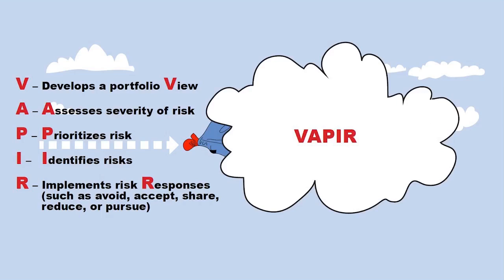The work begins as we go through the fog and the risk. The V is develop portfolio view. The A is assess severity of risk. The P is prioritize that risk. The I is identify the risk. And then the R is implement risk responses. And that's where we use the ARTS — avoid, reduce, transfer, self-insure.